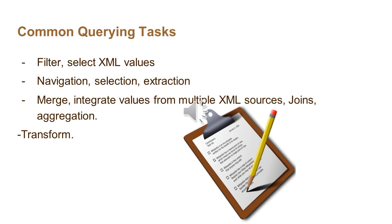XPath handles common querying tasks. It contains filter, selects XML values, and provides navigation — defining where to start. It also supports selection, extraction, merge — integrating values from multiple XML sources — as well as joins, aggregation, and transformation.